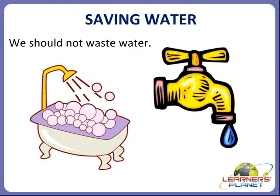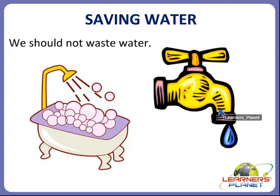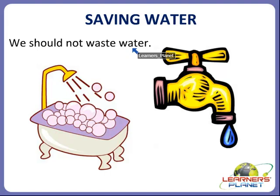Now we will study about saving water. If we have to wash many fruits, we should always wash them in a big bowl — do not use running water. This way we can save water. We should not waste water, and we should not let the tap run when we brush our teeth. We should not waste water while bathing or washing.